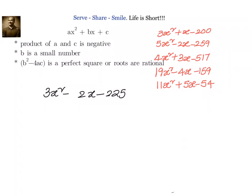Let us take a simple example, 3x² minus 2x minus 225. We know that we have to split the middle term so that we can factorize it easily.